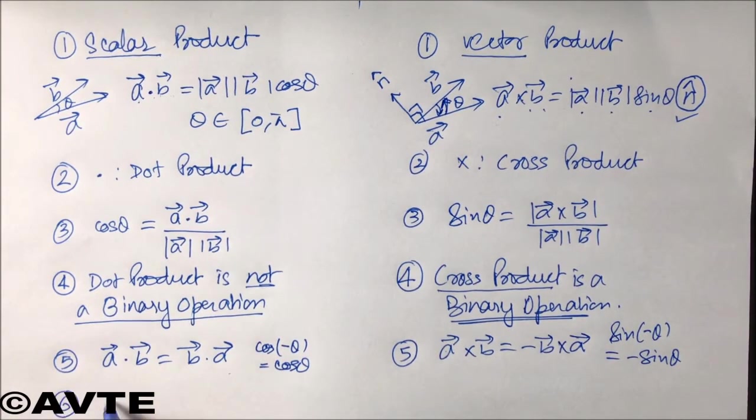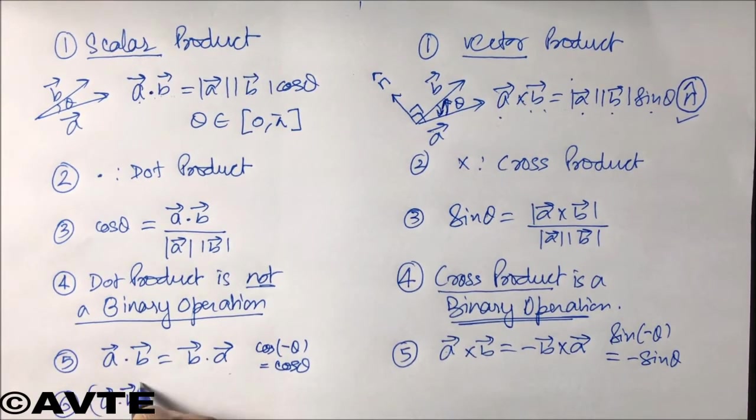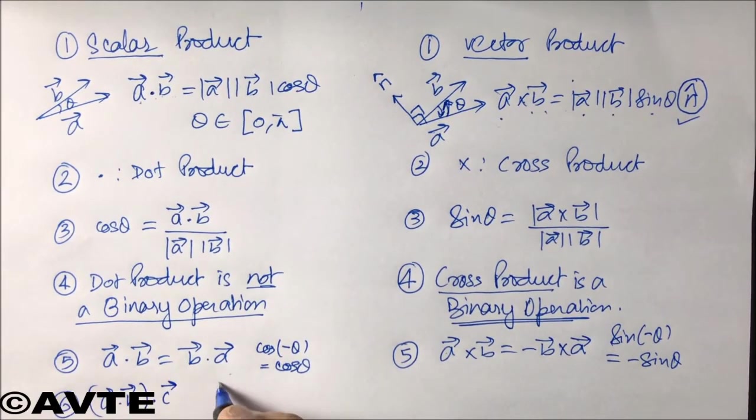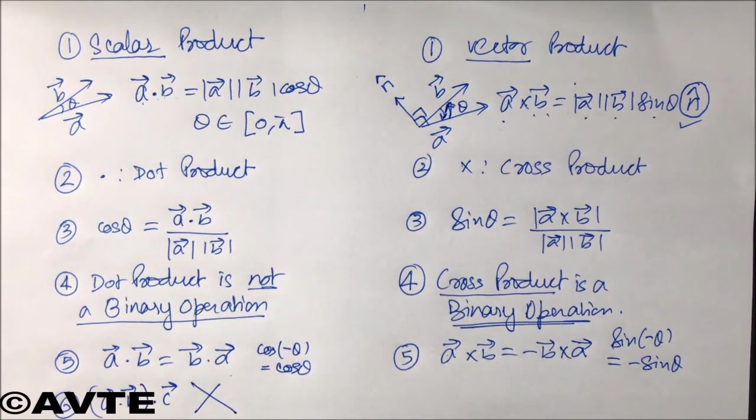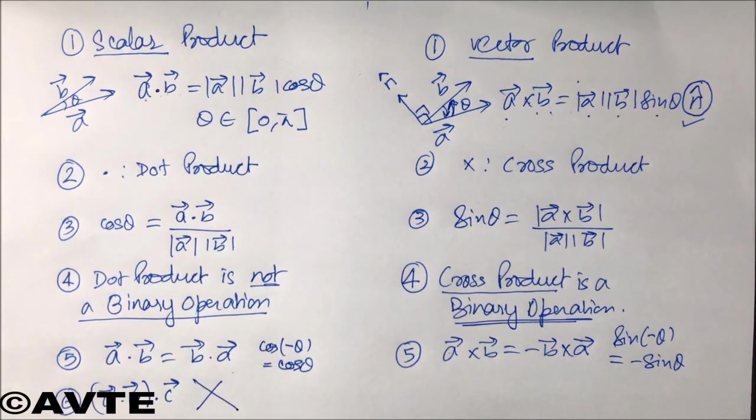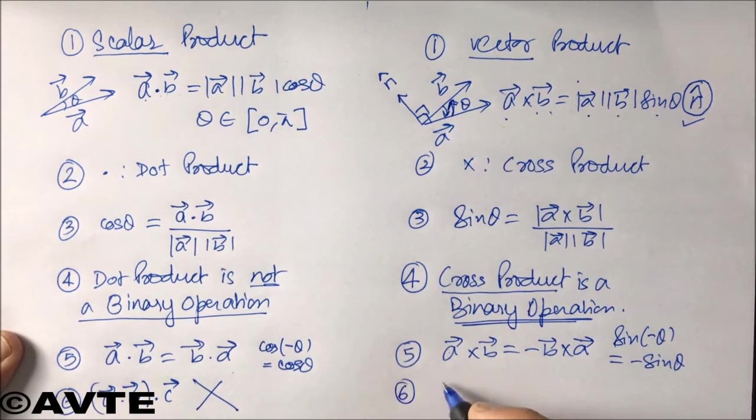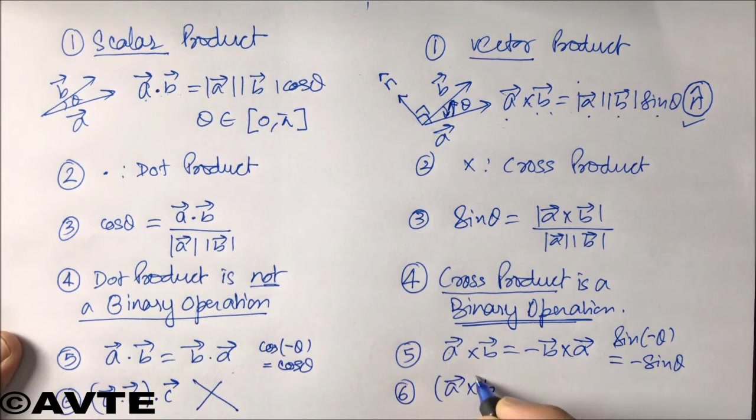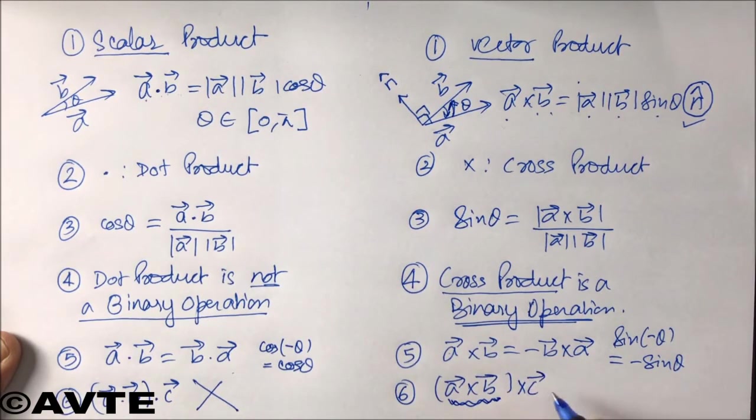Well, if I write a dot b dot c, this is meaningless, because after taking a dot product with two vectors, we can ordinarily multiply with a third vector, but dot with third is not possible. But in case of cross product, you can do that. You can find a cross b, and whatever is the result - because that will be a vector - you can multiply that with another, that is the third vector.